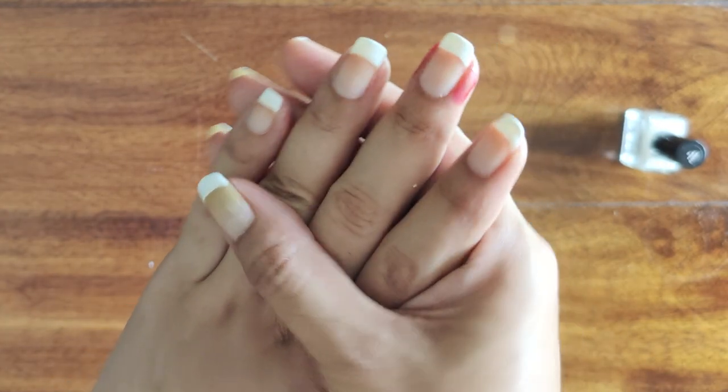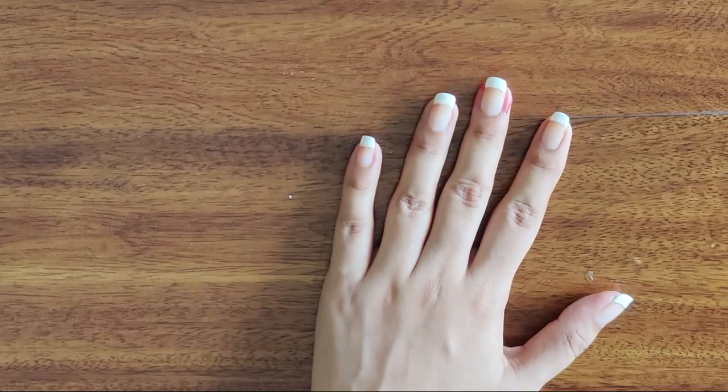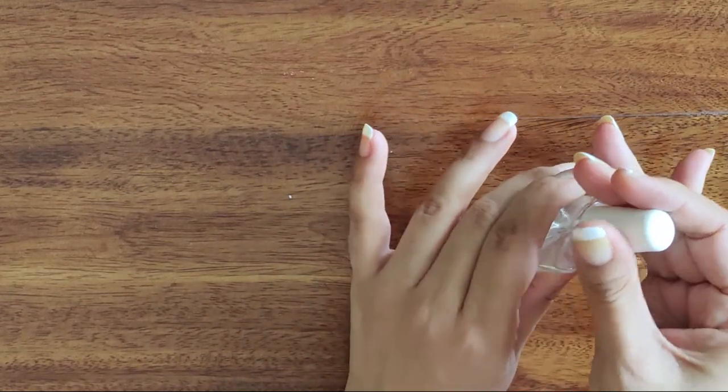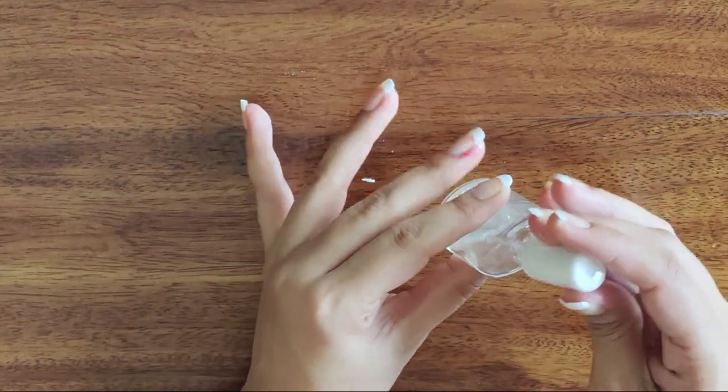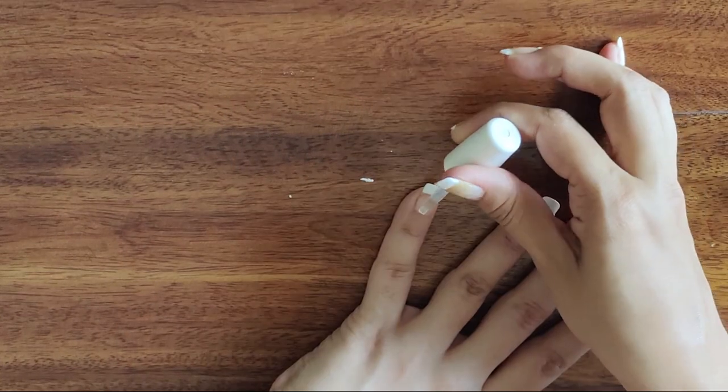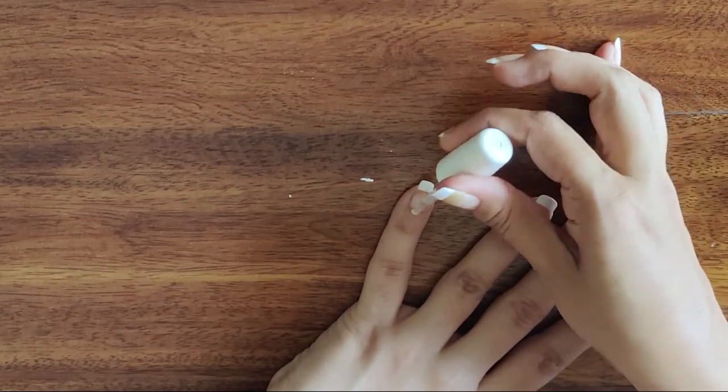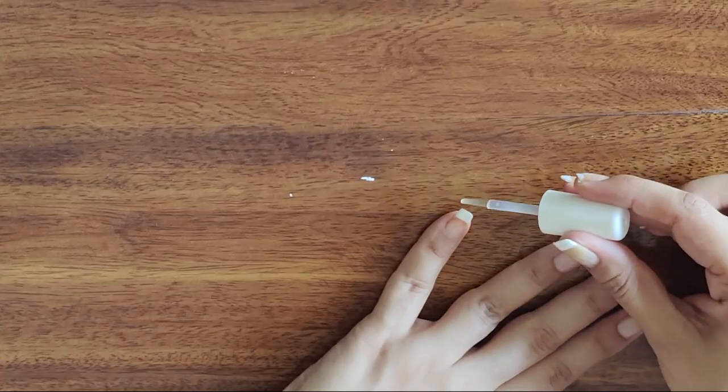Once everything is completely dry, I'm going to go in with a layer of my clear top coat. You can also use Colour Bar, but I prefer Sally Hansen because I feel like the brush is a little nice and long. And so application-wise, it's a little more satisfying and easy.